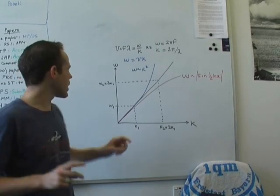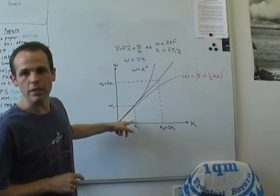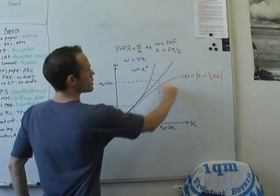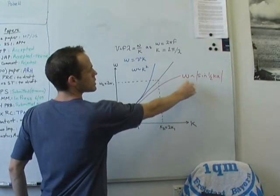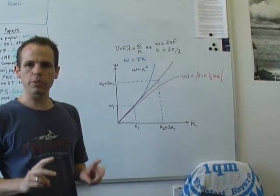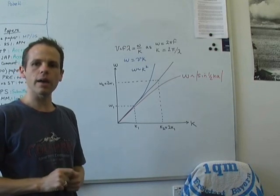And if you do this thing, you end up with a dispersion relation that looks a little bit like this red one up here. It curves downwards, like this, and follows a sort of absolute value of sine, half ka dependence.